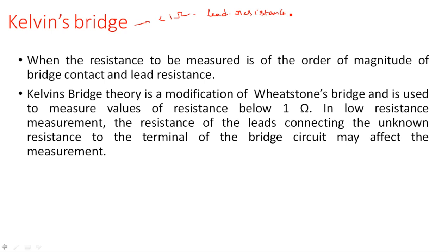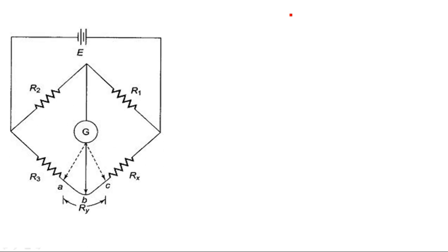Here there is a problem which was not considered in the case of Wheatstone's bridge. This is the circuit diagram of Kelvin's bridge. We are giving the DC supply E, with R1 and R2 as the two resistors, Rx as the unknown resistor, and R3 as the third arm resistor.